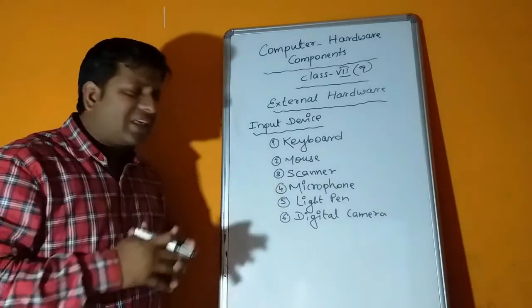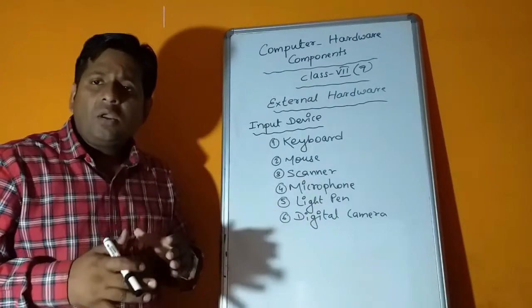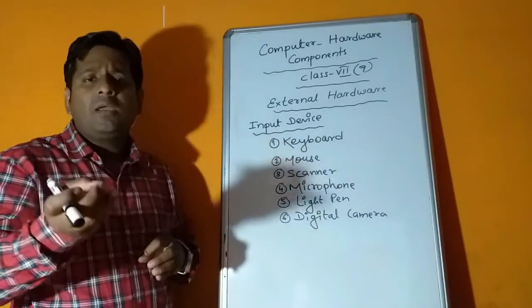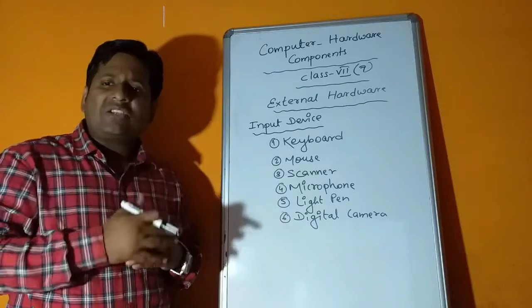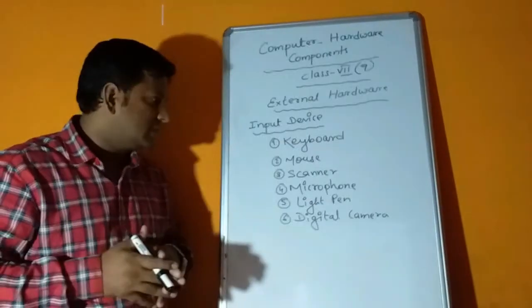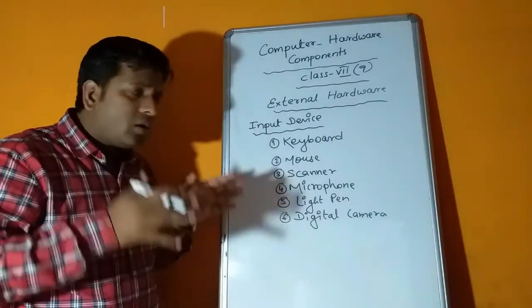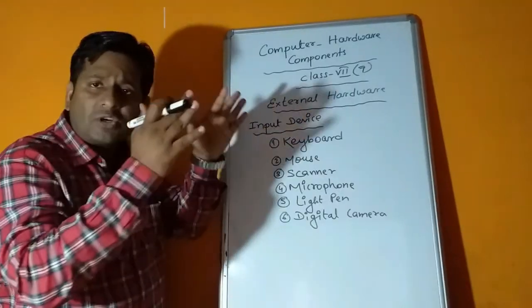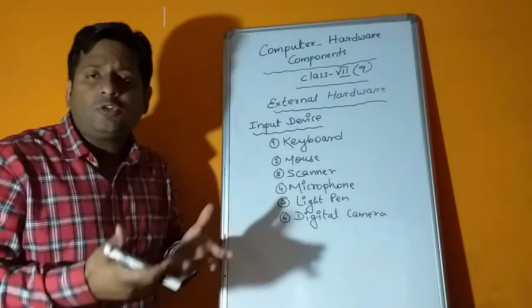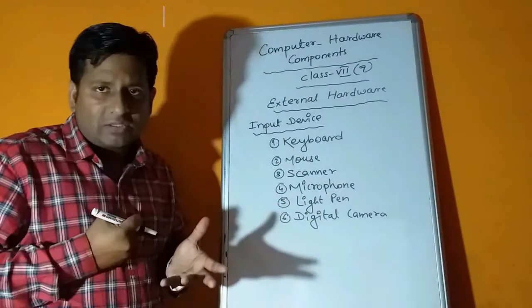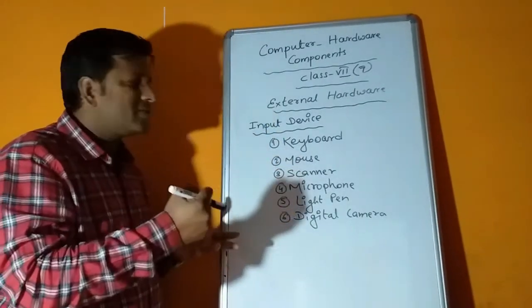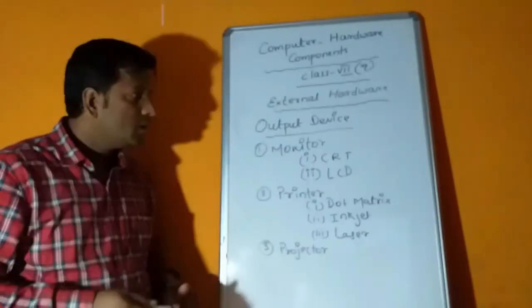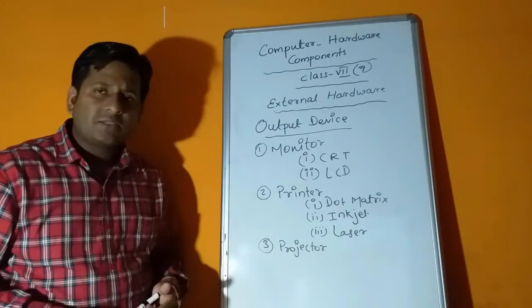Sixth type is digital camera. Digital camera is also an input device because when you click photos, those photos you can store in a computer through USB or card reader. So digital camera is also known as input device. These are used based on our requirement. Without this, computer can be on but will be unable to do the work because we need extra devices for input.